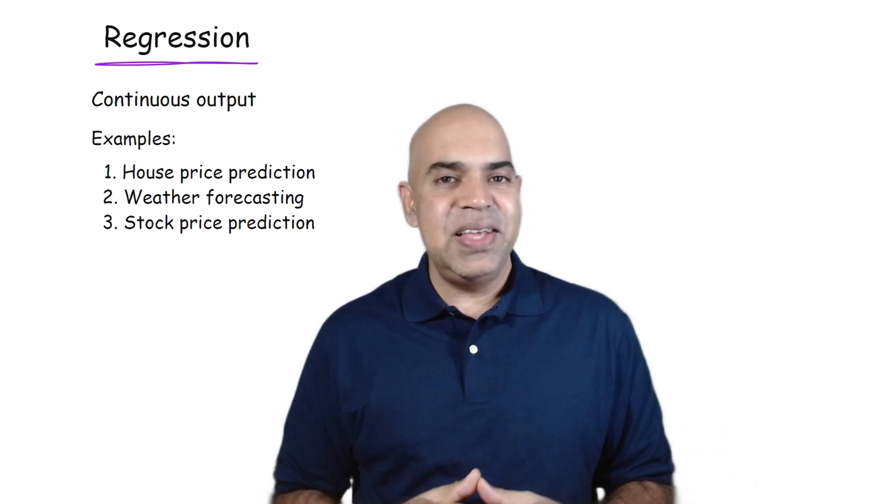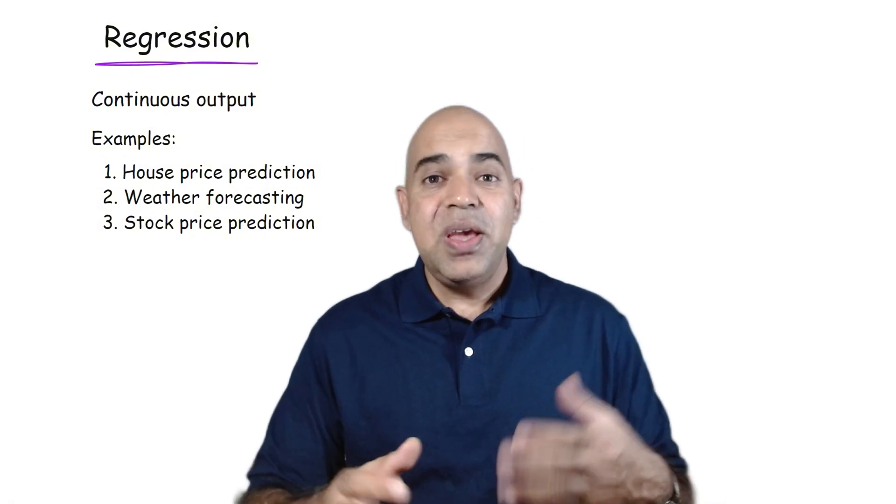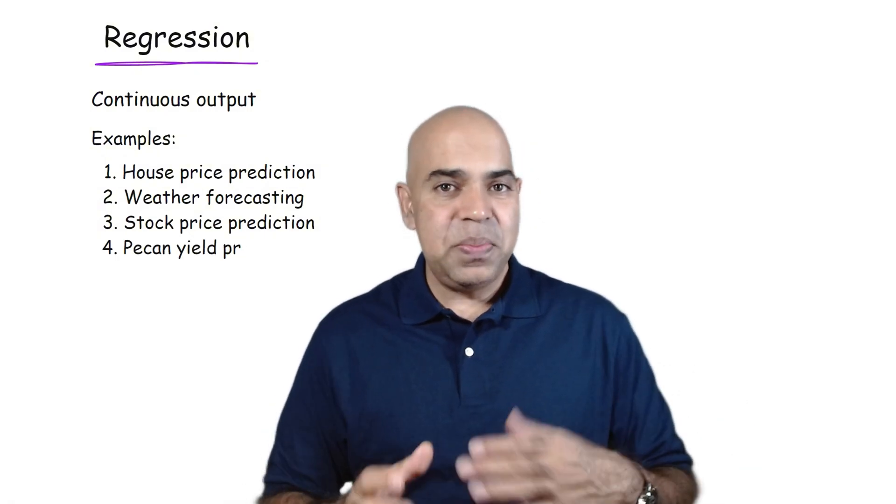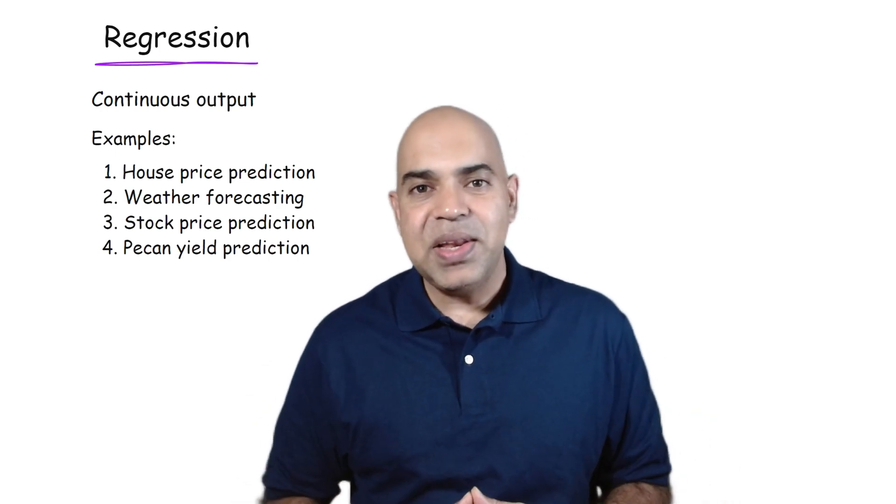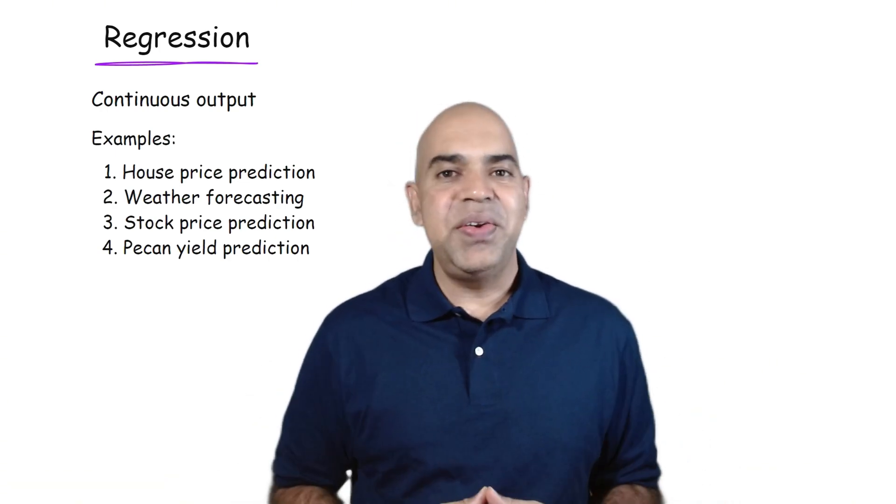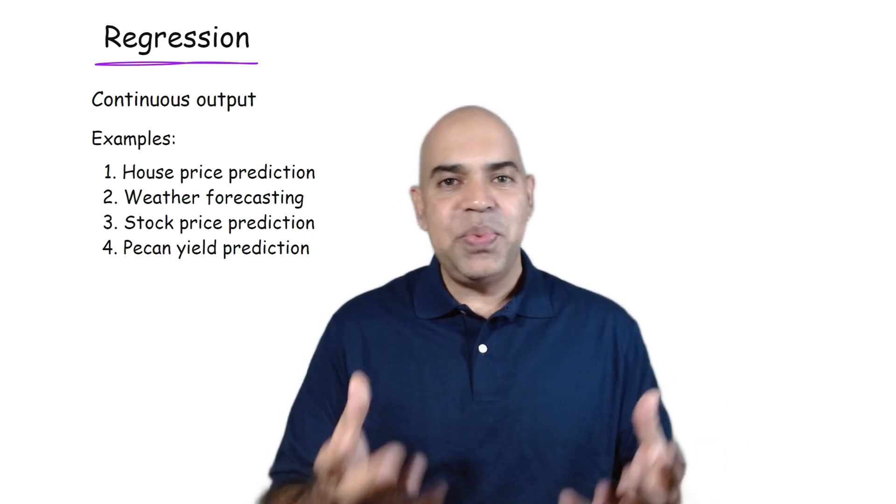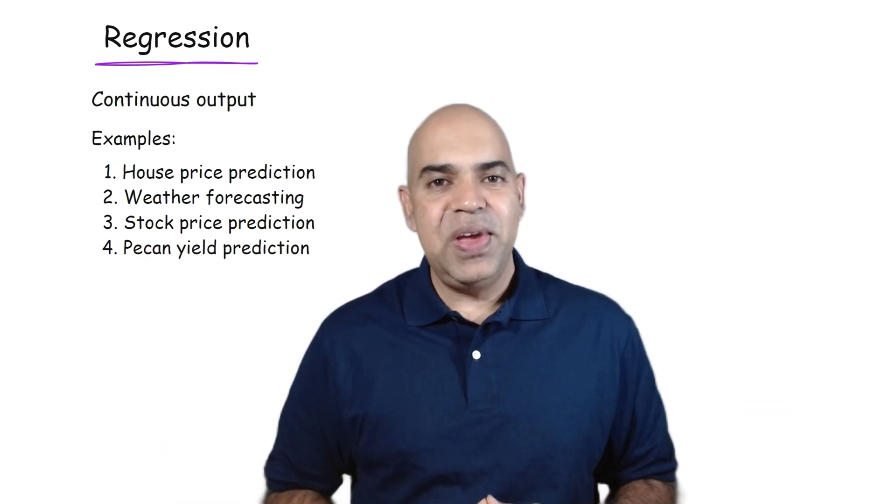Remember, in an earlier lesson, we designed a neural network using Python PyTorch to predict pecan production based on the amount of water, fertilizer, and soil salinity level on the land. It was a regression problem, given that pecan production is a real number with continuous values.